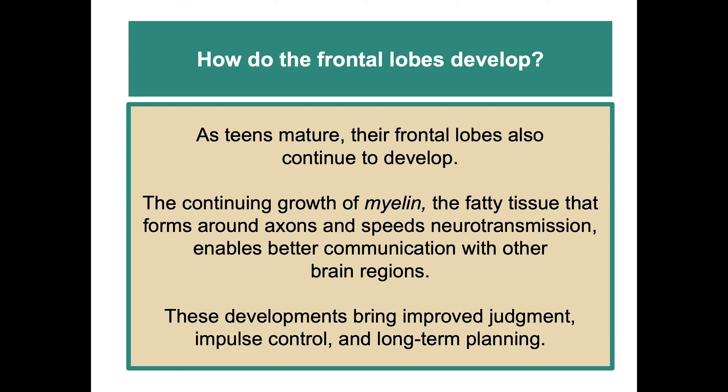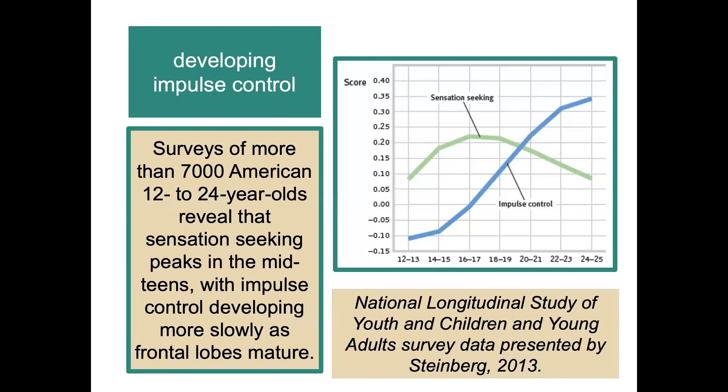During this time, the brain is still developing. For many, brains will not be fully mature until the mid-20s. Surveys of more than 7,000 American 12- to 24-year-olds reveal that sensation-seeking peaks in the middle teens, with impulse control developing more slowly as frontal lobes mature.